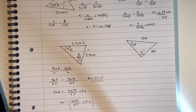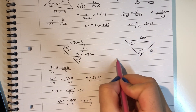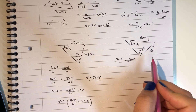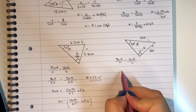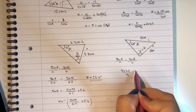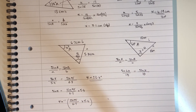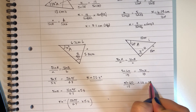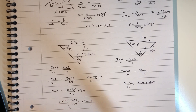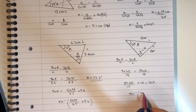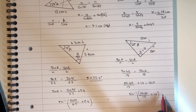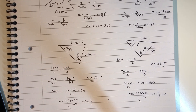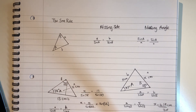For the second missing angle question, I write sine A over A equals sine B over B, label A, a, B, b, and substitute in: sine 60 over 15 equals sine X over 10. Multiplying both sides by 10 gives sine X equals sine 60 over 15 multiplied by 10. Again, because we're finding a missing angle, I use shift-sin in the calculator: shift-sin of (sine 60 divided by 15, multiplied by 10), giving X equals 35.3 degrees to one decimal place.